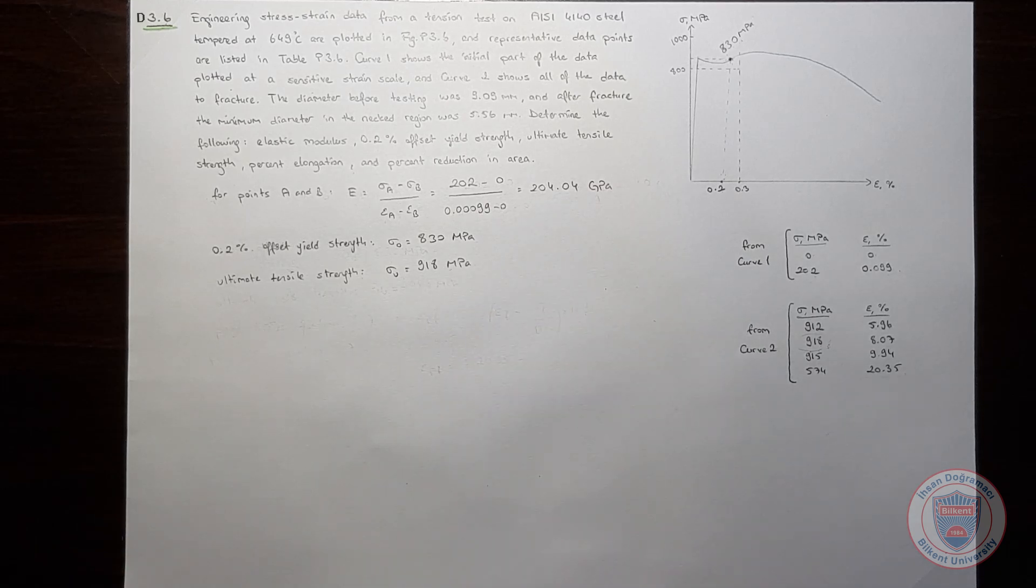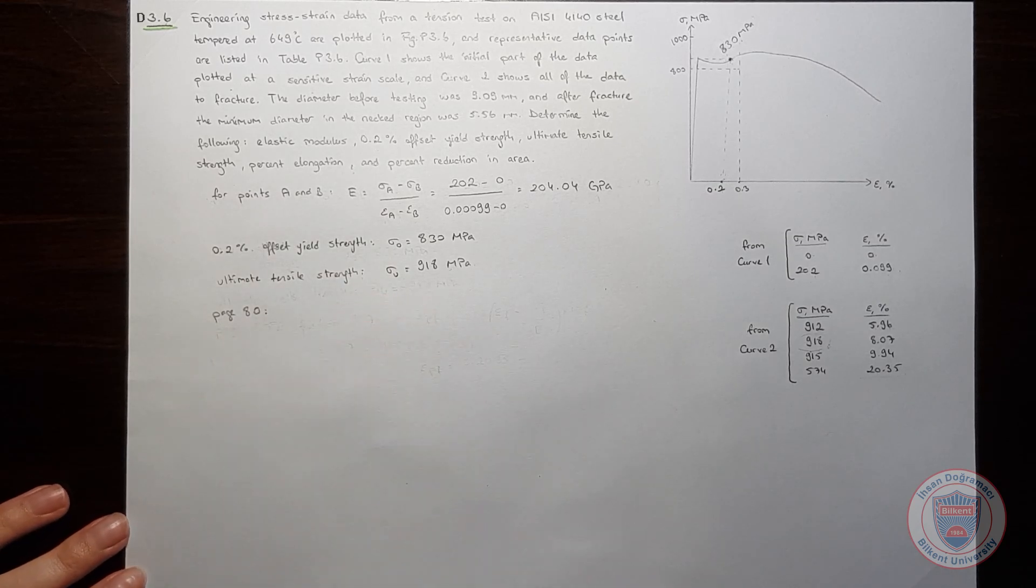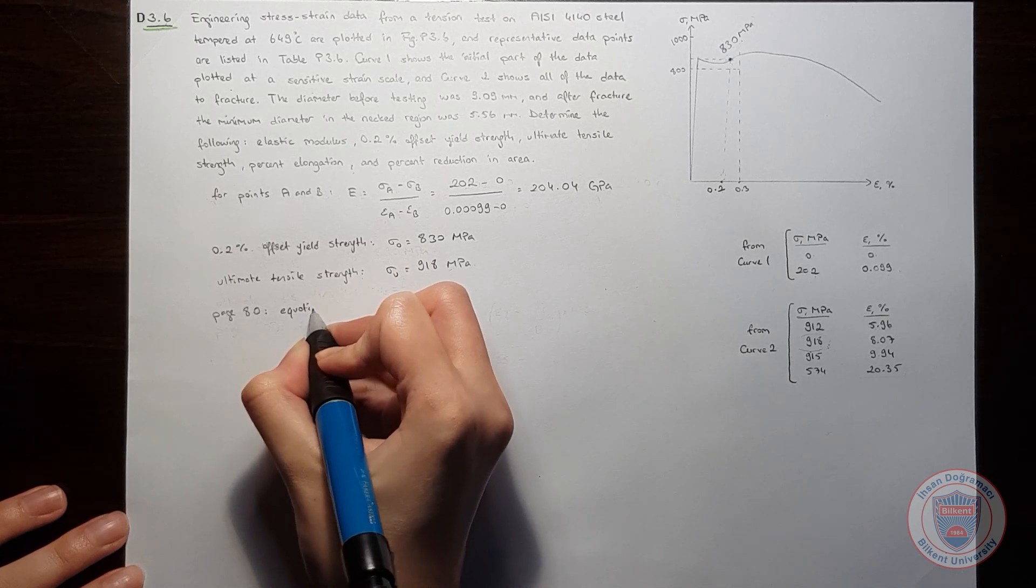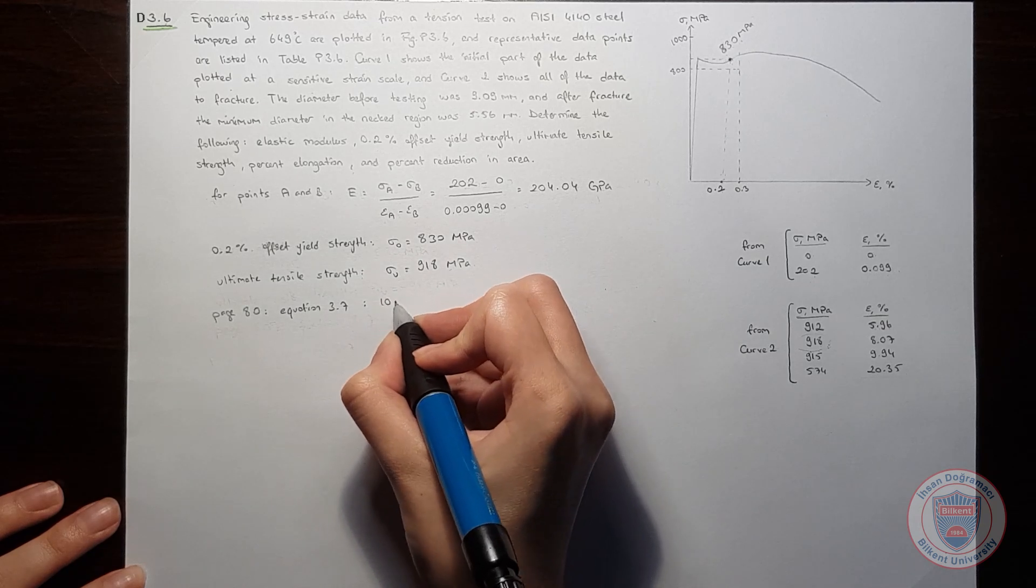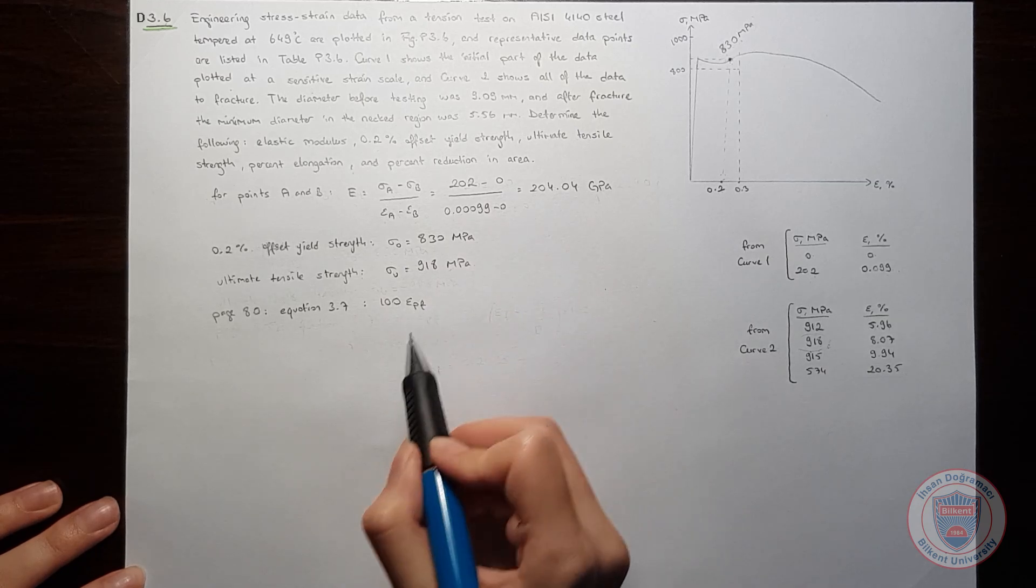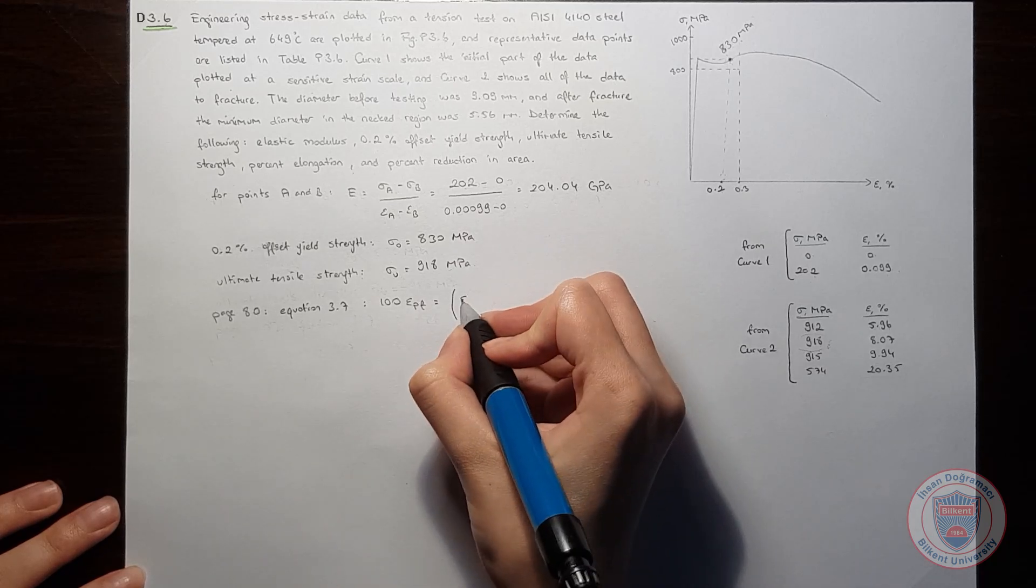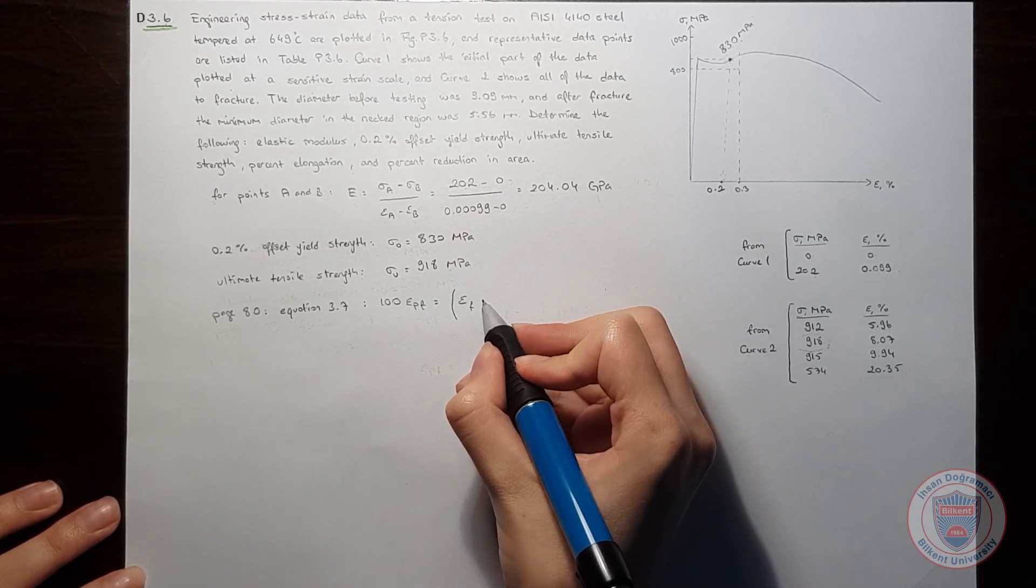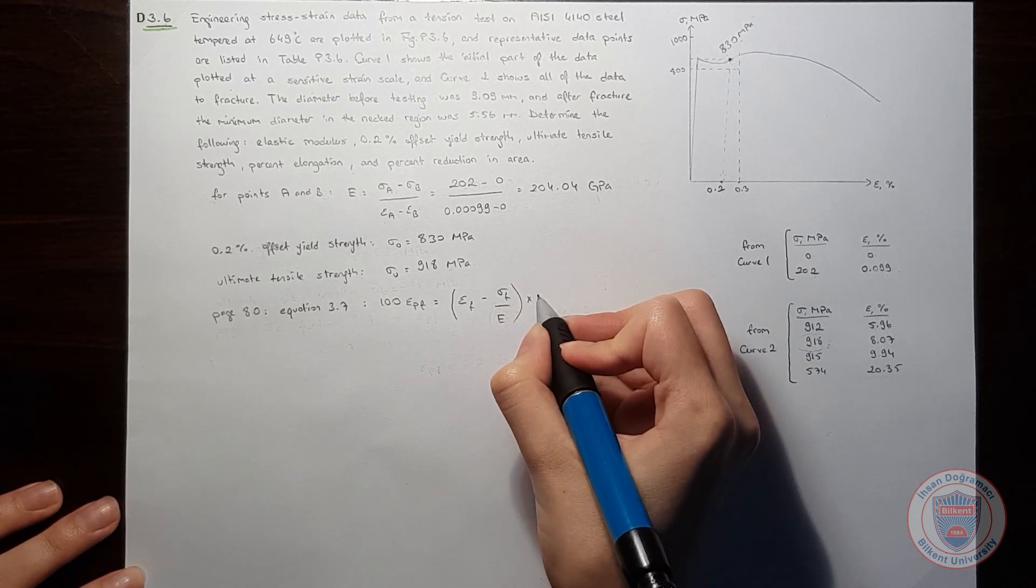So we will now calculate percent elongation. In the book on page 80, we have an equation which is 3.7, and it tells us that percent elongation after fracture is equal to elongation at fracture minus fractured strength over Young's modulus times 100.